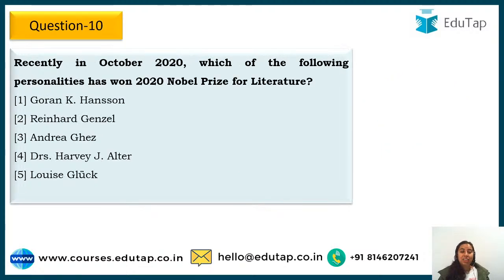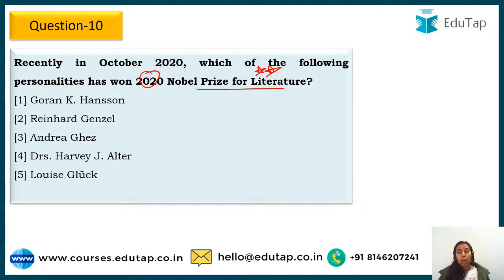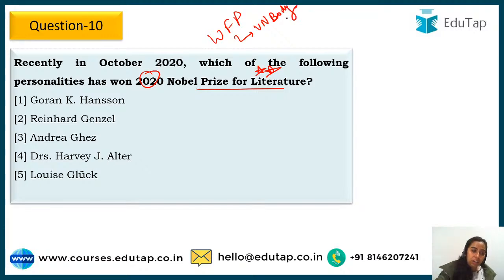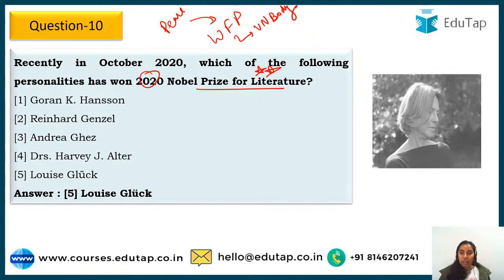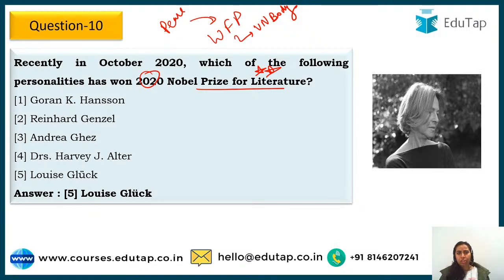Question 10: Which personality has won the 2020 Nobel Prize for Literature? Nobel Prizes are very important — you have to know all the important Nobel Prizes. For Peace, the winner is World Food Programme (WFP), a United Nations body. For Literature, the winner is Louis Glück — she is a female writer and has been given the Nobel Prize for Literature. Do also check out Nobel Prizes for medicine, biology, physics, and chemistry.